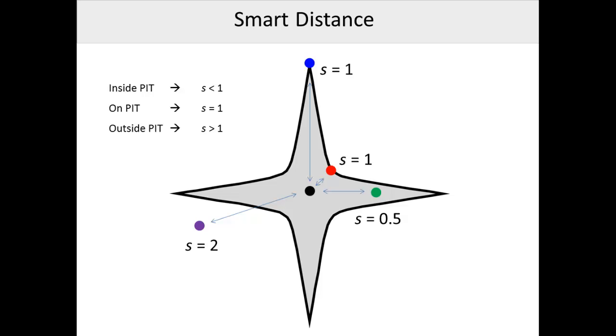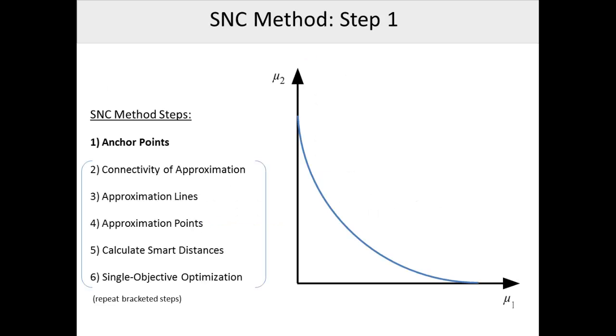This ability to simply quantify trade-off between points enables the SNC method to more intelligently, and therefore efficiently, search a design space for a smart Pareto set. The smart normal constraint method works in n dimensions, but for simplicity's sake, here are the steps of the SNC method shown for a simple two-dimensional problem. In step 1, we find anchor points, which are the extreme values of the Pareto frontier for each objective. This is done by optimizing with respect to just one objective at a time.